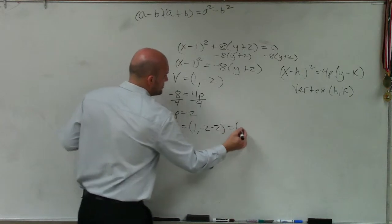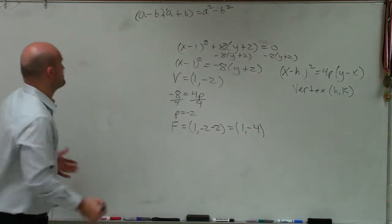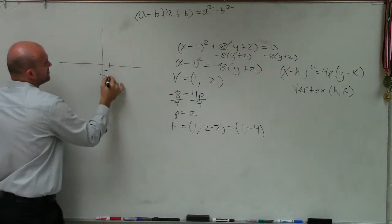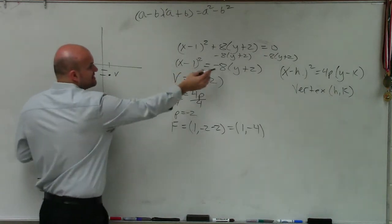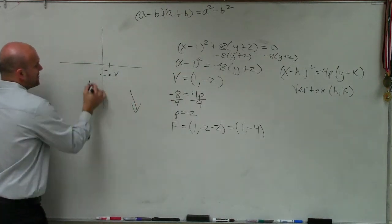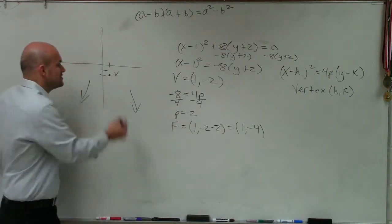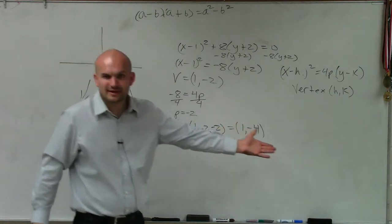So therefore, that becomes 1, negative 4. And what I really like to do is make a visual representation of this. 1, negative 2. That's the vertex. We know, since p is negative, that the graph opens down. And it opens down, the p value is negative 2. So you just go down 2. And that's how I got that point.